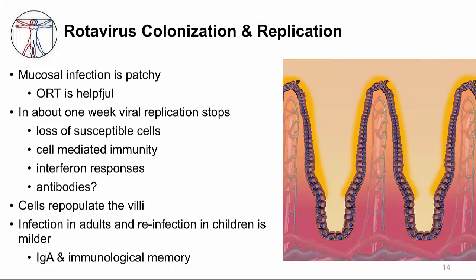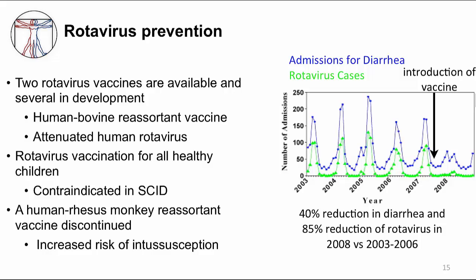Because the virus does not seem to affect the replicating precursor cells or stem cells at the base of the crypts, the villi will become normal again in about a week. It's not entirely clear what stops the infection — it may be partly due to cellular immune response, because people with cell-mediated immune deficiencies can have diarrhea lasting months. IgA responses are also important for prevention of disease. Natural infection is not completely protective but does ameliorate symptoms in subsequent infections. We can prevent rotavirus infections with vaccines. There are two rotavirus vaccines available; one was approved in the U.S. in 2006. Vaccine is recommended for all healthy children but not those who are severely immunocompromised, because both vaccines are live attenuated vaccines. There is an 85% reduction in rotavirus cases after vaccine implementation and a 40% reduction in all hospital admissions for diarrhea.